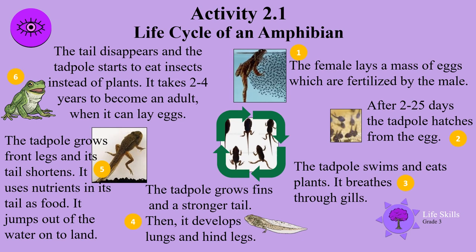Stage 4: the tadpole grows fins and a stronger tail, then it develops lungs and hind legs. Stage 5: the tadpole grows front legs and its tail shortens. It uses nutrients in its tail as food and jumps out of water onto land. Stage 6: the tail disappears and the tadpole starts to eat insects instead of plants. It takes 2 to 4 years to become an adult when it lays eggs, and this cycle continues.